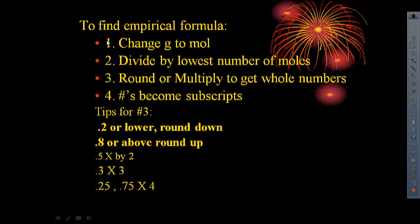To find the empirical formula, you have to follow these steps. First, you change your grams to moles. Then you're going to divide by the lowest number of moles. Then you will round or multiply that to get whole numbers. And these numbers will become the subscripts for the element you're solving for.